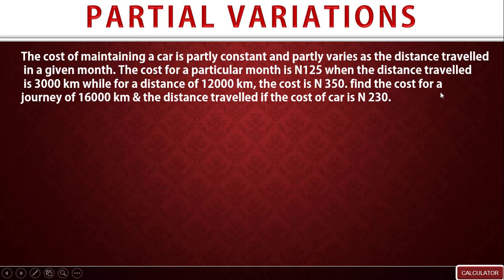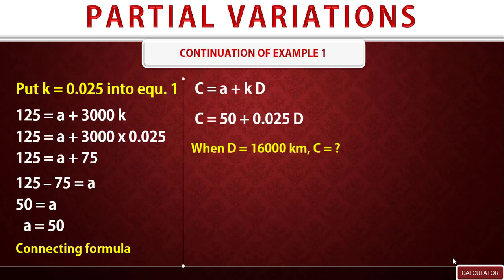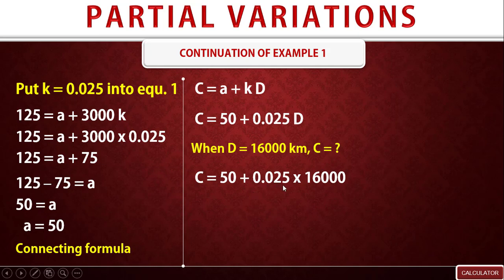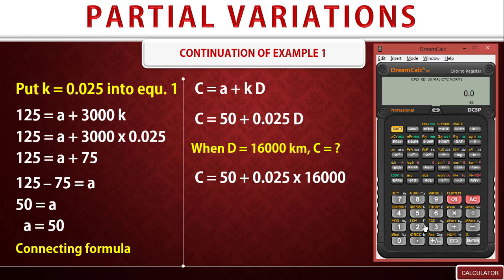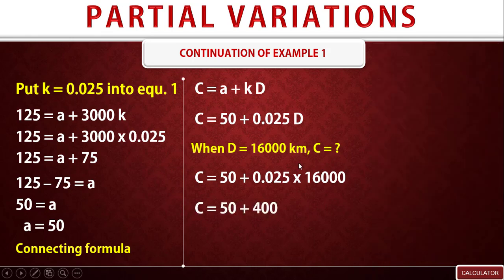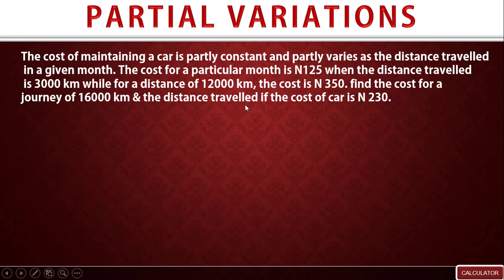Now we find the cost for a journey of 16,000 kilometers. We are given D equals 16,000 and need to find C. Substituting into the connecting formula: C equals 50 plus 0.025 times 16,000. Calculating 0.025 times 16,000 gives 400. So C equals 50 plus 400, which equals 450. The cost is 450 naira.